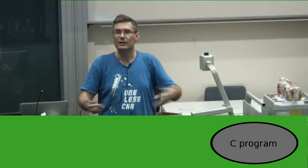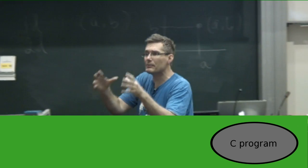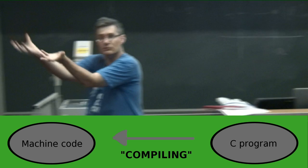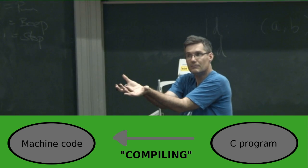C looks like English. Just write it in a file, like a text file. It looks like words. You write it down. You give it to the computer. You give it to a program called a compiler. And the compiler takes your C program and converts it into machine code.